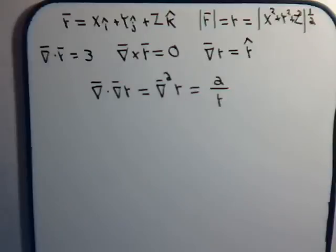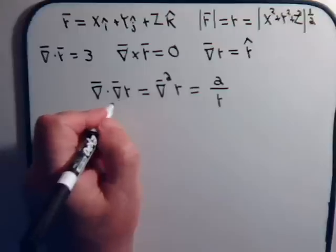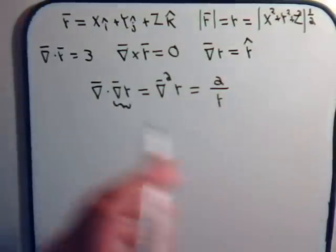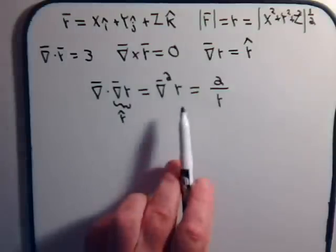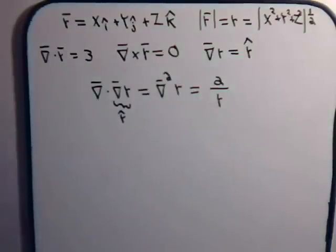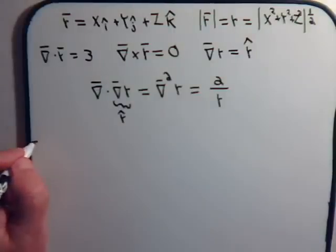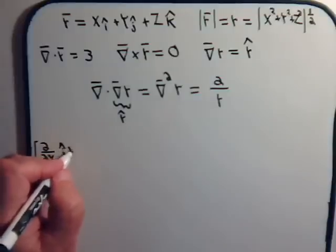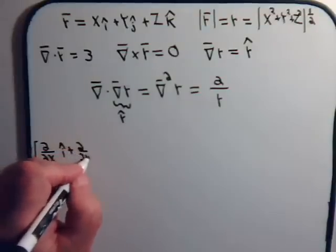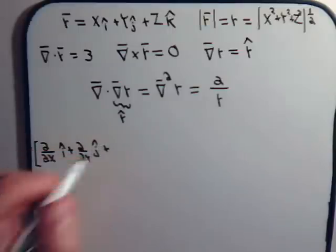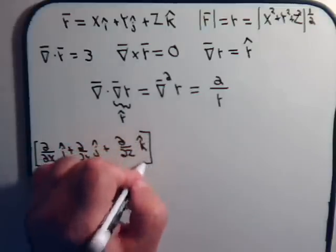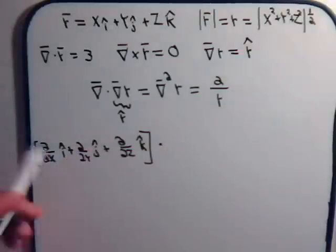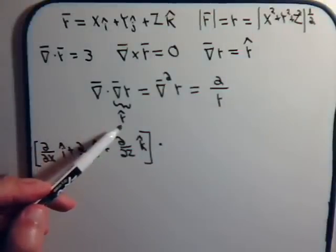To do that is really pretty straightforward, because we know what the gradient of |r| is — that's just the unit position vector. So essentially, to get the Laplacian, we're going to take the dot product of the del operator — partial with respect to x, plus partial with respect to y, plus partial with respect to z — with the unit position vector.